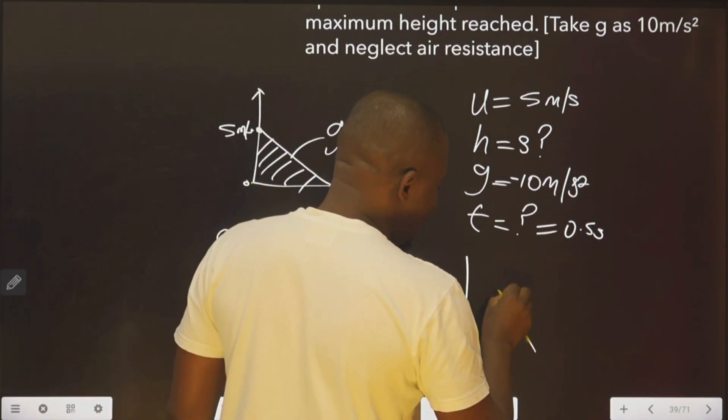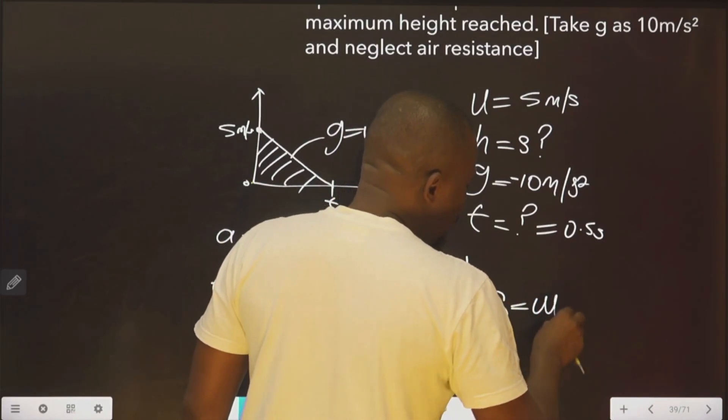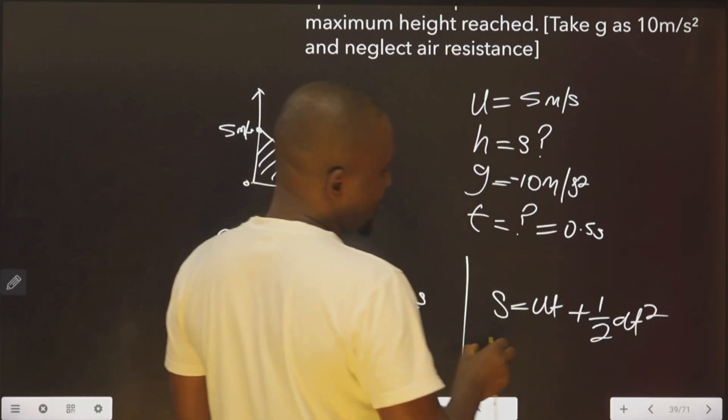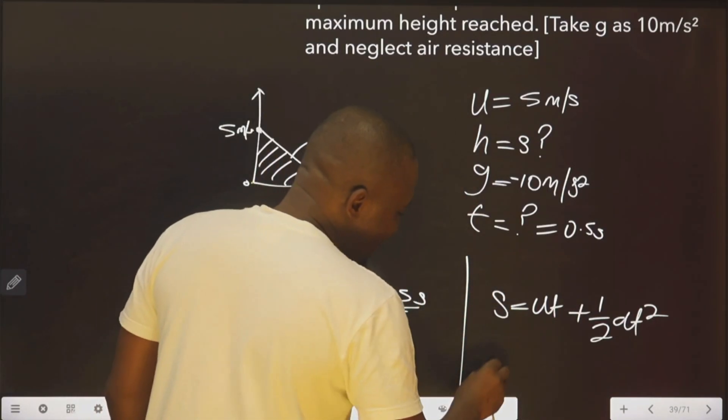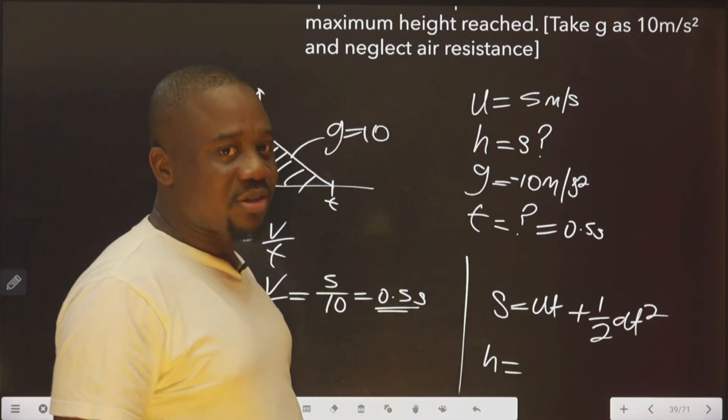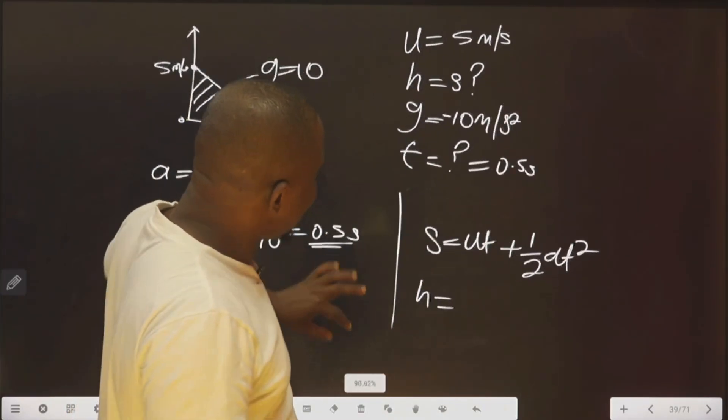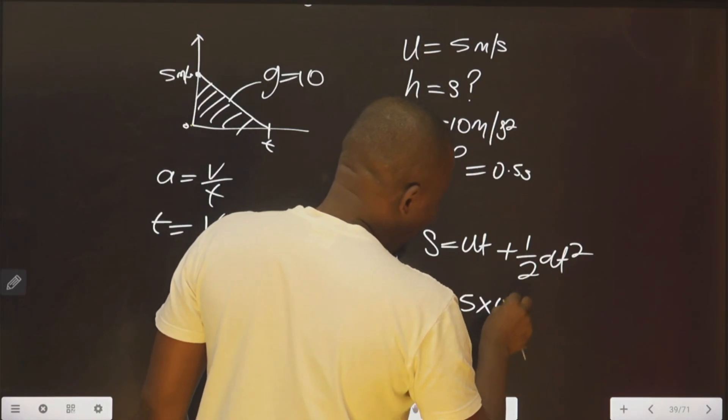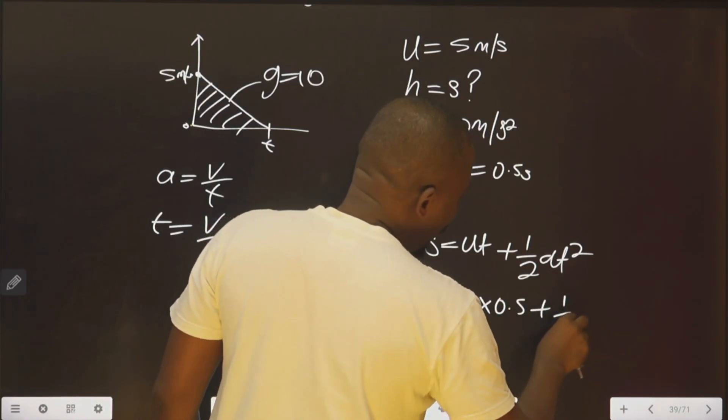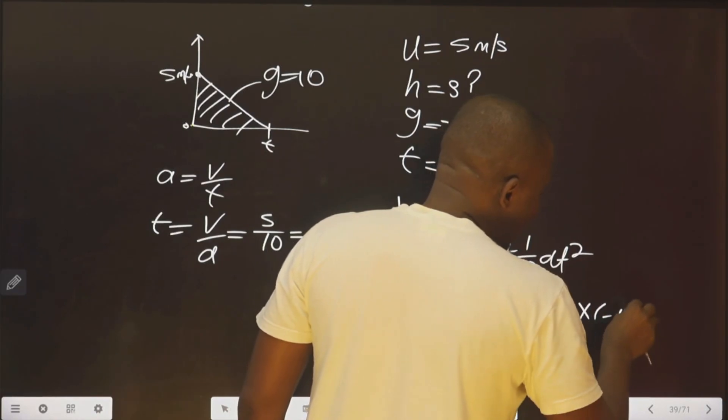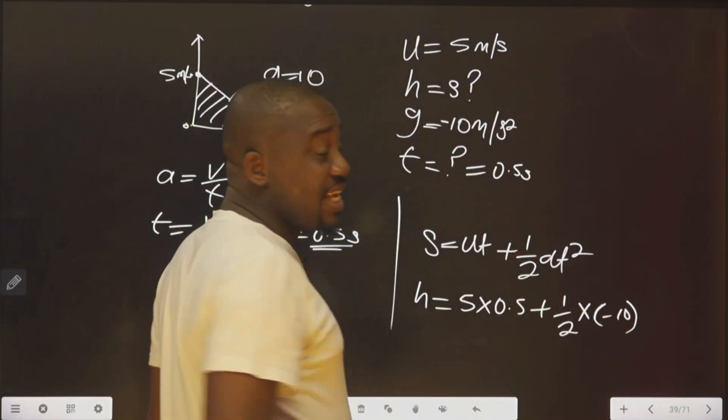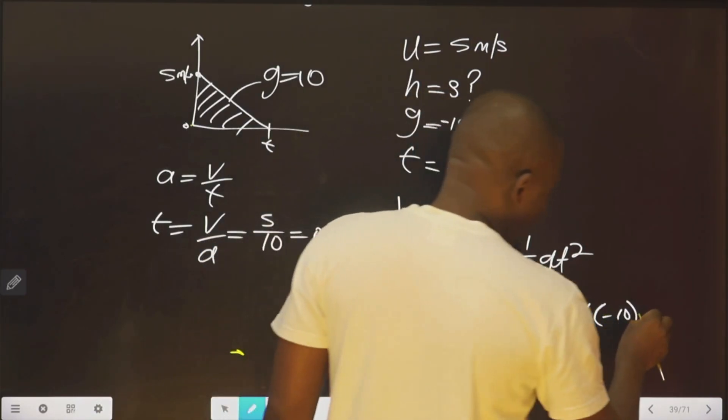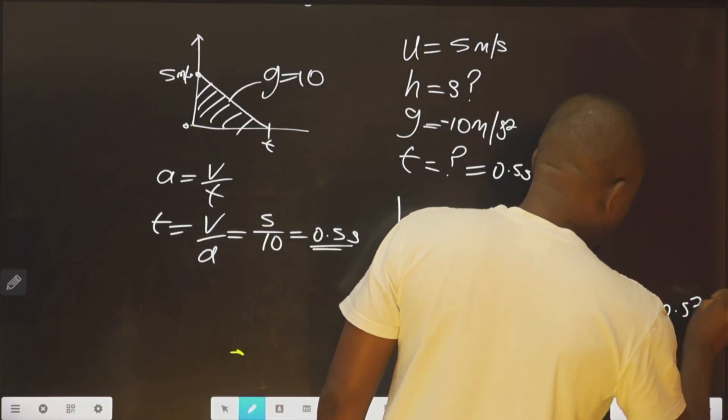So we can use this formula now: s equals ut plus 1 over 2 at squared. This is h in this context because we are talking about height. We know the initial velocity to be 5 multiplied by this 0.5. That time, 1 over 2 multiplied by minus 10 because this is deceleration. This is deceleration. 1 over 2 multiplied by 0.5 squared.